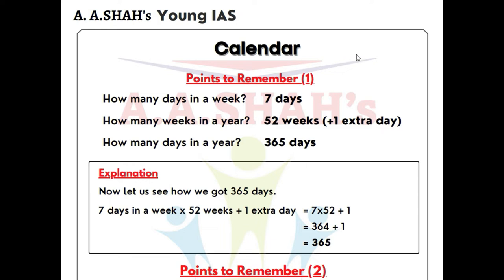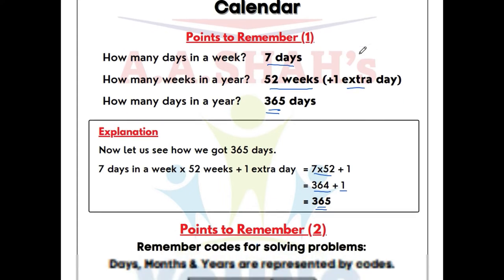First point: how many days in a week? And how many weeks in a year? There are 52 weeks in a year. 52 weeks gives us 364 days, but we know there are 365 days in a year, so one extra day remains. So there are 52 weeks plus one extra day.